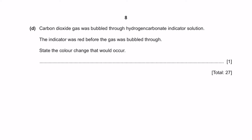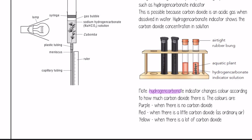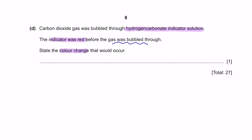Part D: Carbon dioxide gas was bubbled through hydrogen carbonate indicator solution. The indicator was red before the gas was bubbled through — state the colour change that would occur. Under Chapter 6, Plant Nutrition, you learn that hydrogen carbonate indicator changes colour based on CO₂ levels: no CO₂ gives purple, ordinary air (little CO₂) gives red, and a lot of CO₂ gives yellow. Since the gas was bubbled through, there is a lot of CO₂, so the colour change will be to yellow.